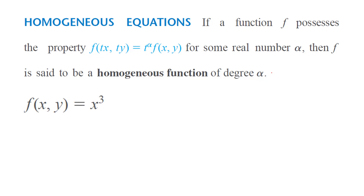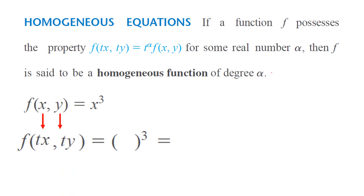Consider the function f of x and y equals x to the power three — note it has no y in it. To check if it's homogeneous, we plug in tx for x and ty for y and simplify algebraically. The function becomes tx to the third.